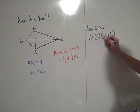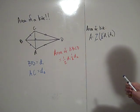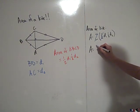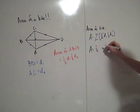So this two and this one half cancel. And I'm left with the area formula for a kite, which is one half D1 times D2.